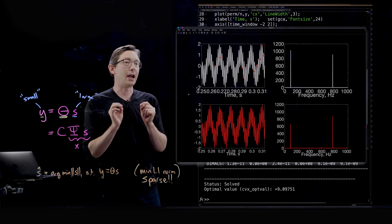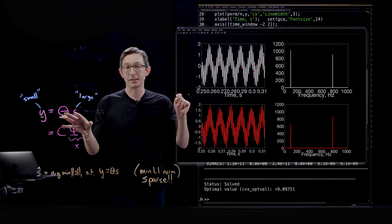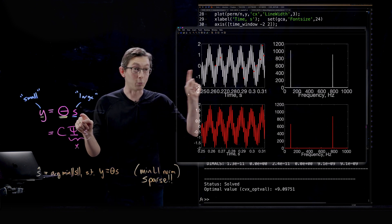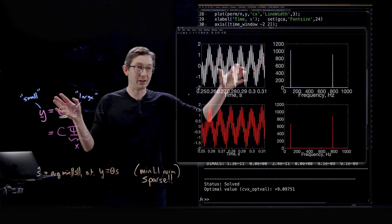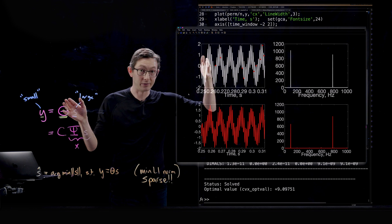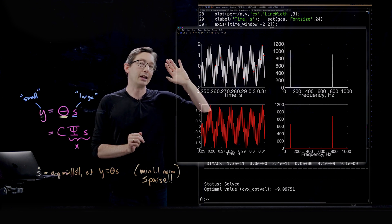In the last lecture I told you that you could beat the Shannon Nyquist sampling rate if you randomly sampled 128 time points out of this very high resolution time series of this audio signal.